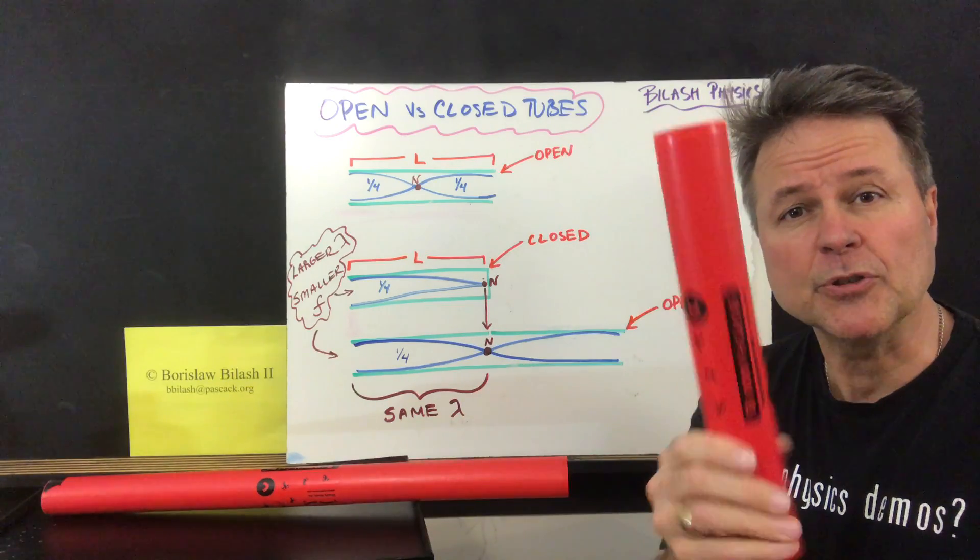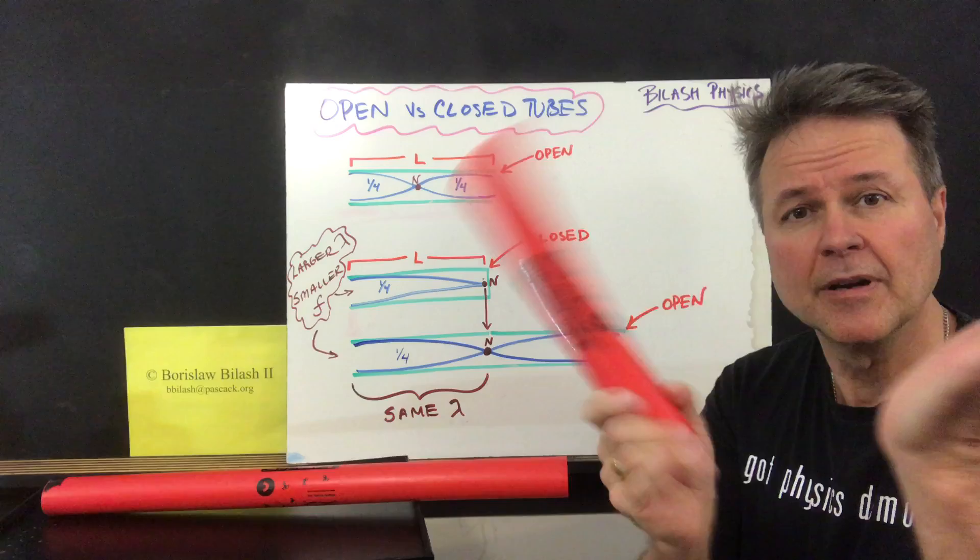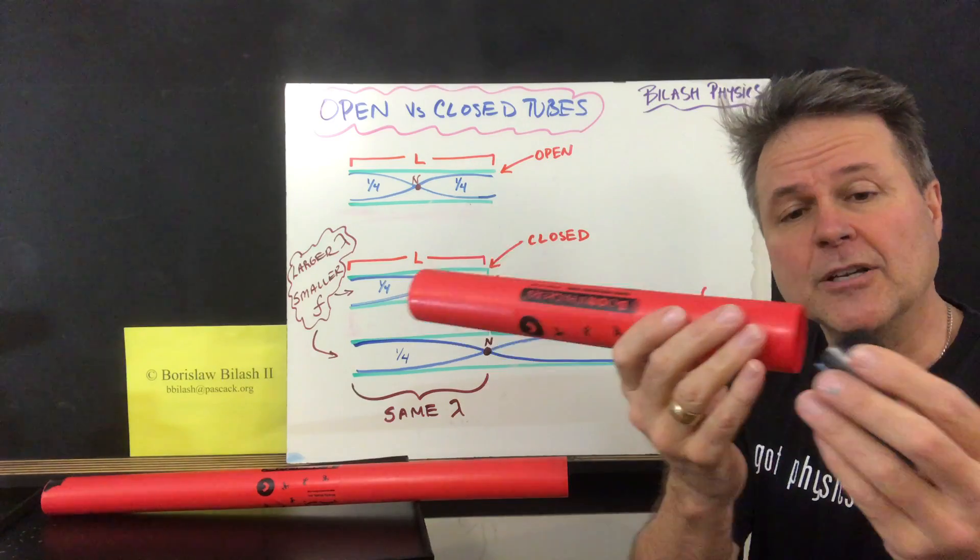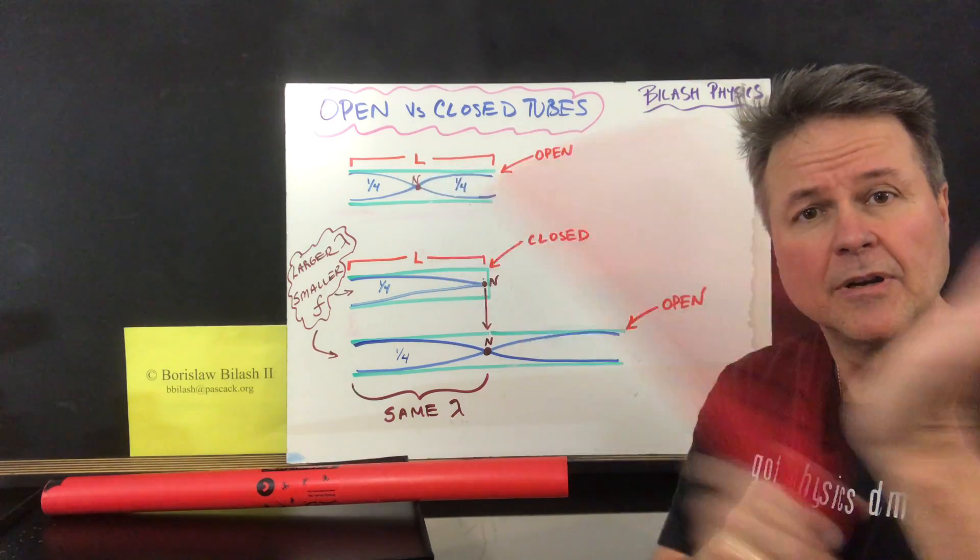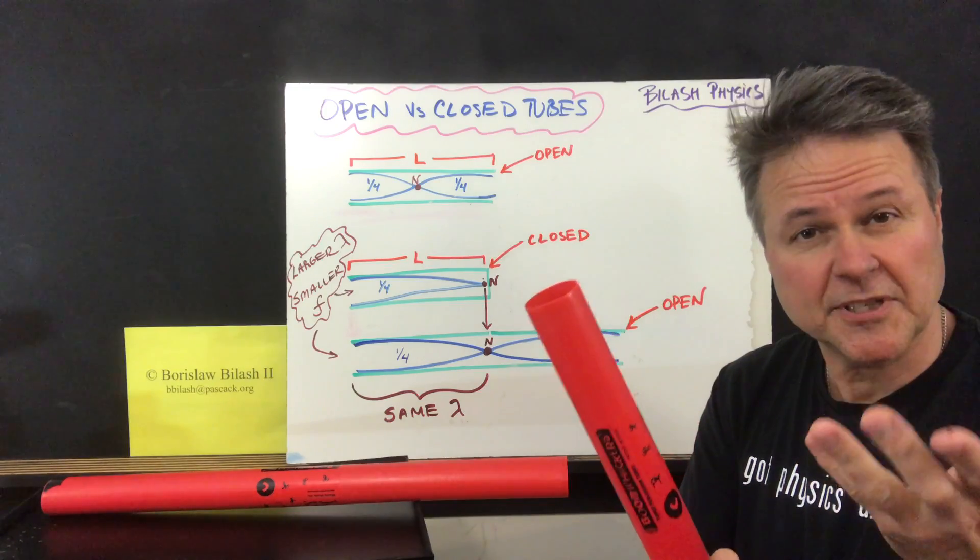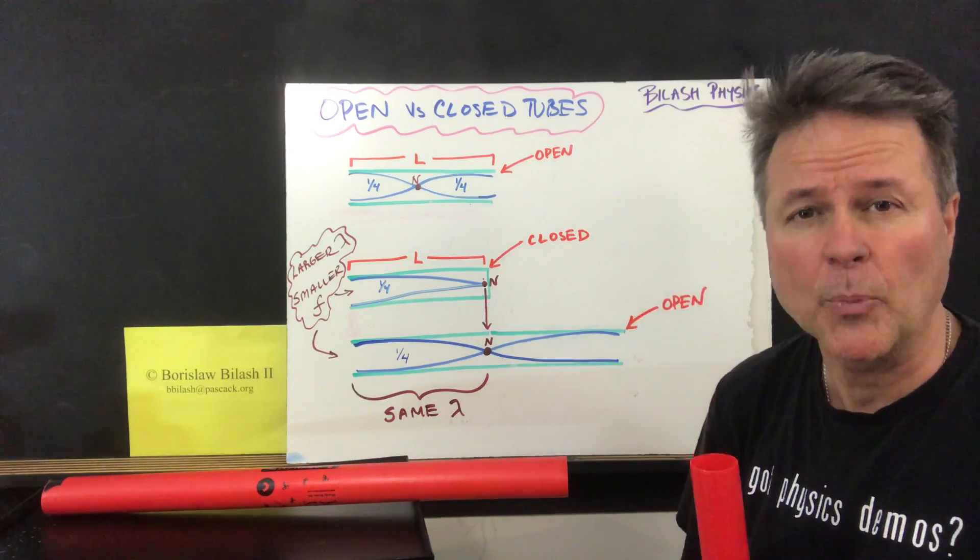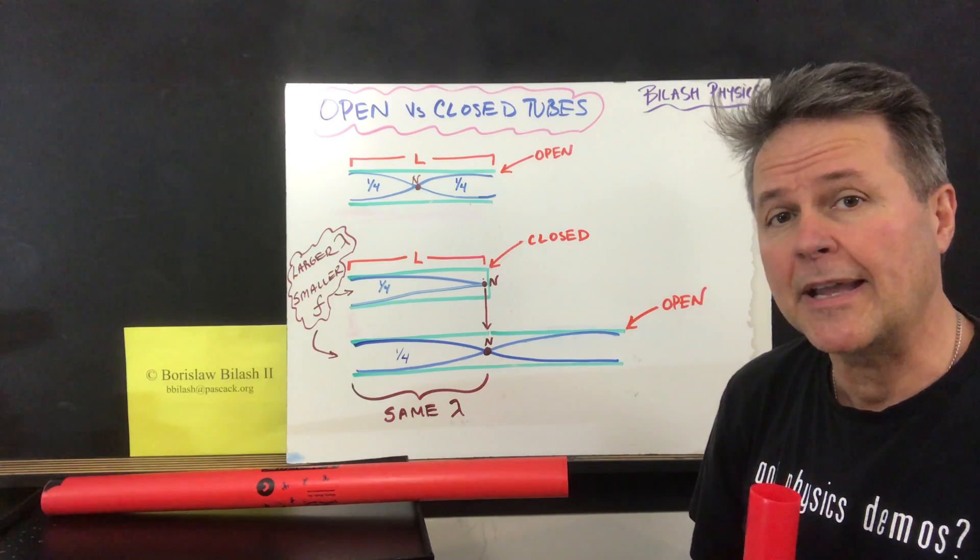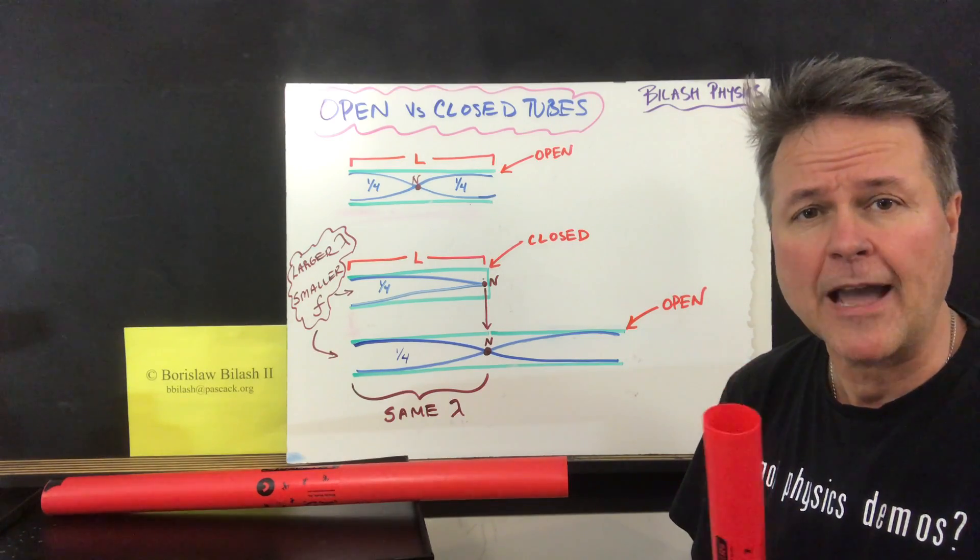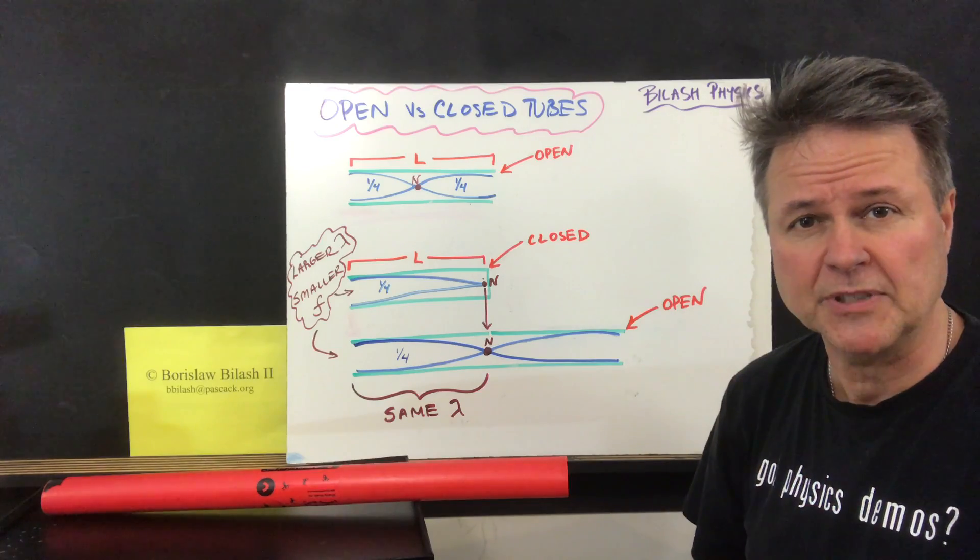If we listen to the sound produced by the open tube and then close the tube, you see that the closed-end tube has a lower frequency than the open tube. That can be explained by the shape of the wave found in the open versus the closed-ended tube.